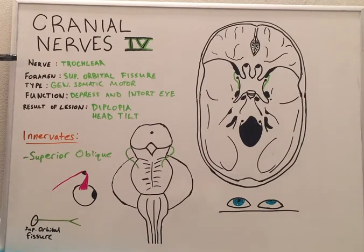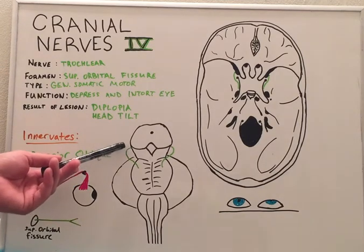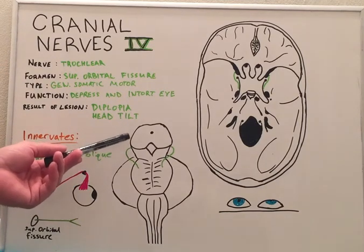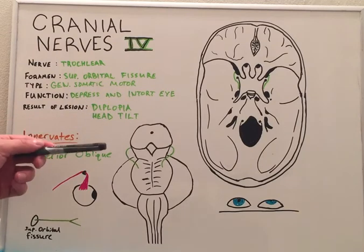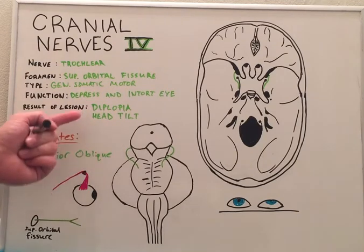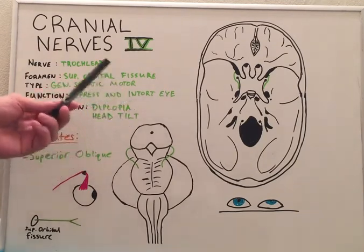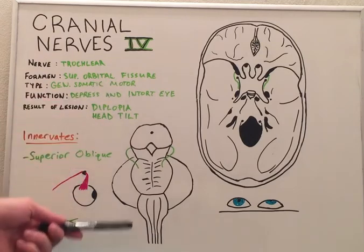The trochlear nerve arises from the trochlear nucleus of the brain and emerges from the posterior aspect of the midbrain. This is the only cranial nerve which emerges from the posterior aspect of the brain stem.